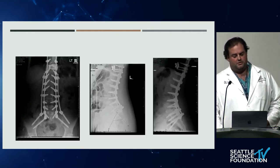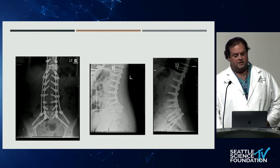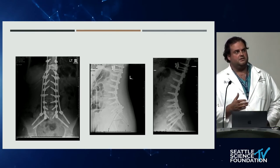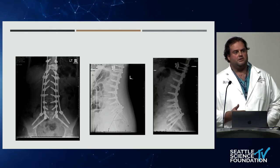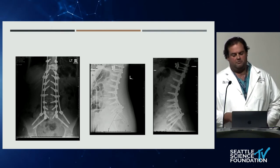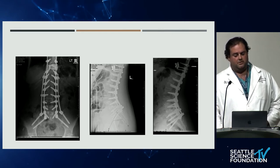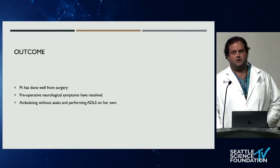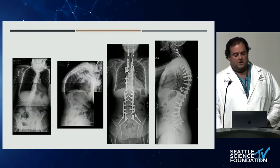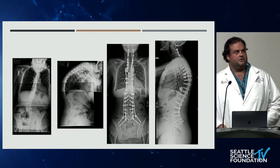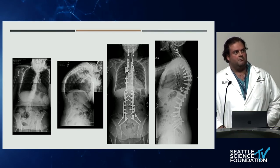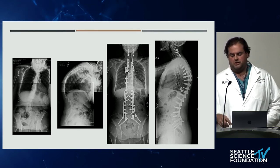The third stage was anterior lumbar interbody fusions at L4-5 and L5-S1, and a lateral oblique anterior-psoas approach at T10-11 to provide anterior column support from C2 to pelvis. She did very well from this. The timeframe: October — original C2 to T6; December — T6 to pelvis; about two and a half months later — the anterior portion. Her neurologic symptoms essentially resolved; she's ambulating without assist, performing ADLs independently, and is very happy. Spine parameters are now well within acceptable range.